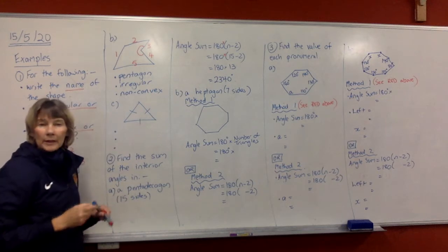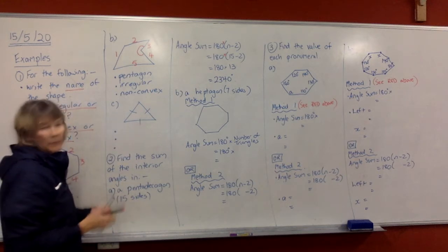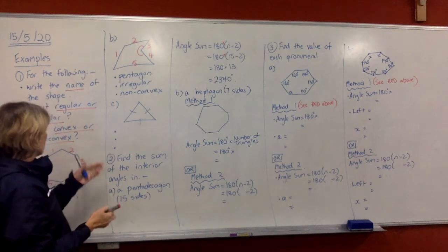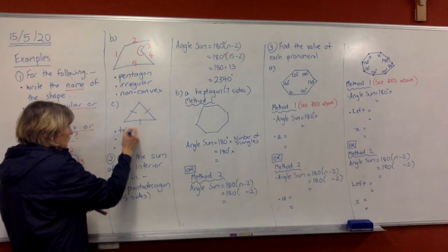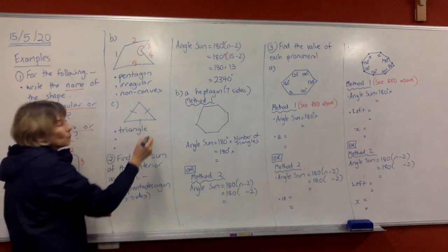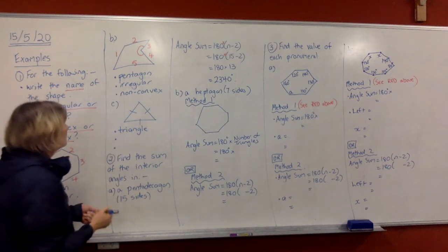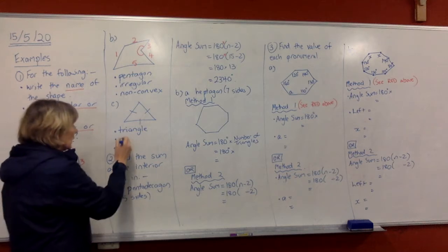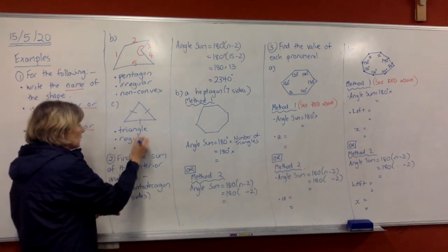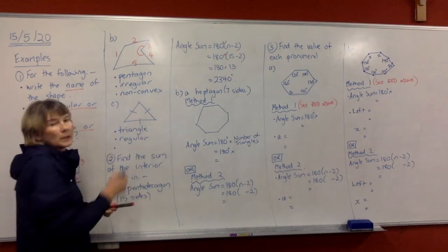In the next one, you've got an equilateral triangle. We know what that shape is, but we've got to say what it is. The name of the shape is a triangle. If you want, you can say equilateral triangle. Then is it regular or irregular? This one is regular because all those sides are equal. We can tell they're equal because they've been marked with equal markings.